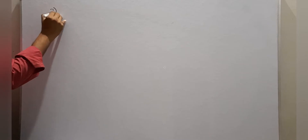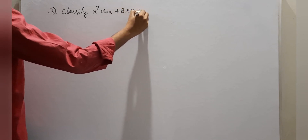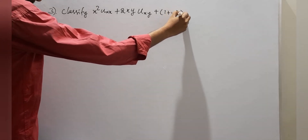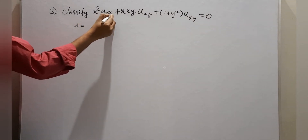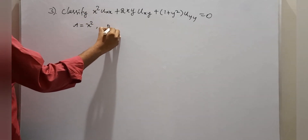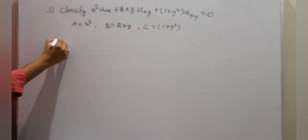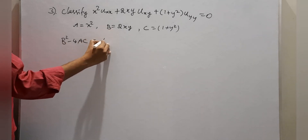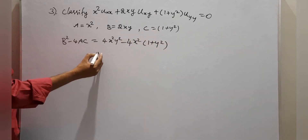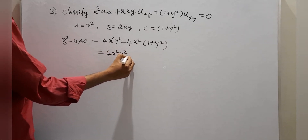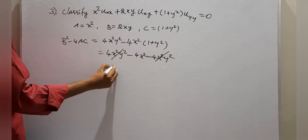Problem 3: Classify x²u_xx + 2xy u_xy + (1 + y²)u_yy = 0. Here A = x², B = 2xy, C = 1 + y². Calculate B² minus 4AC: 4x²y² minus 4 times x² times (1 + y²) equals 4x²y² minus 4x² minus 4x²y². The first and third terms cancel, leaving minus 4x².